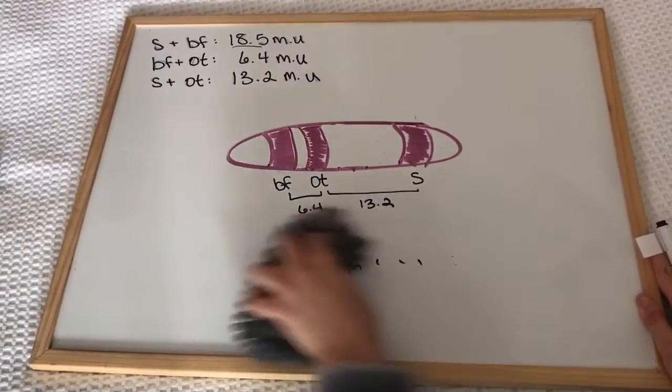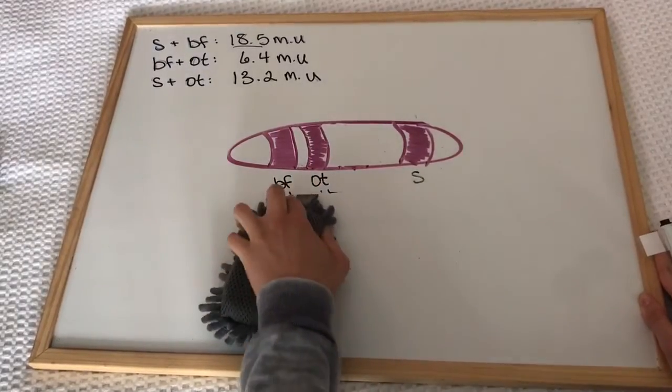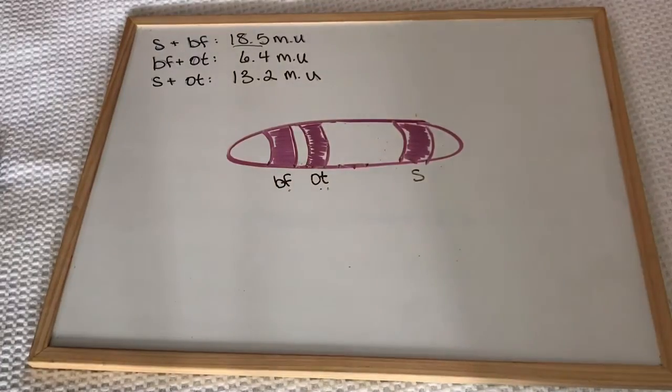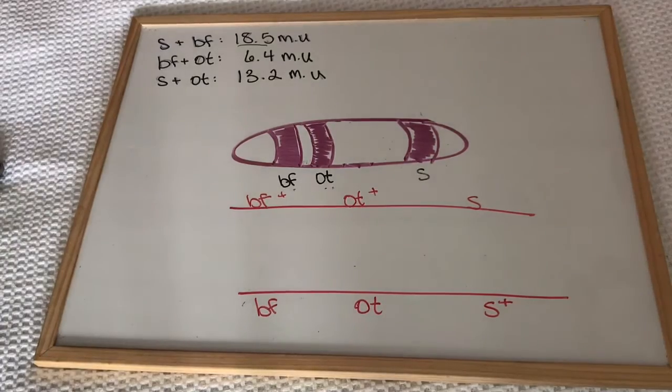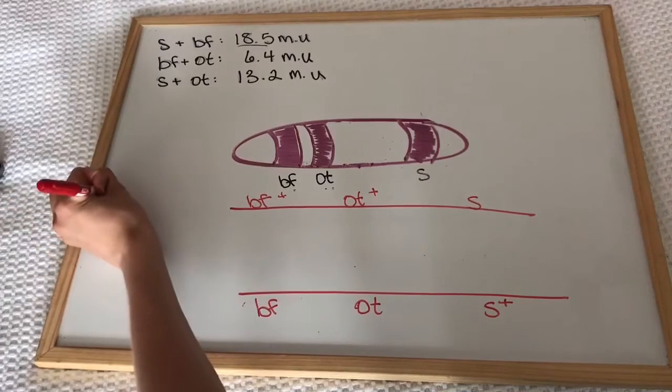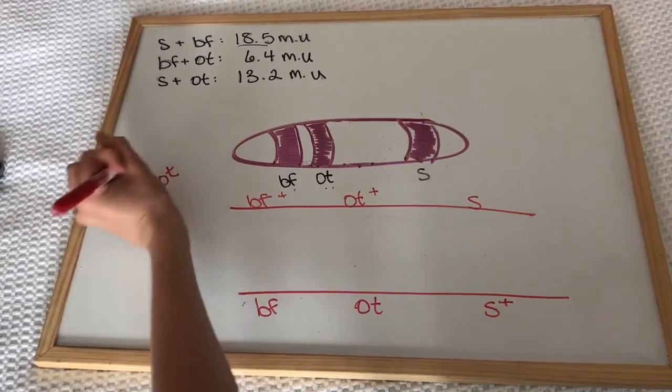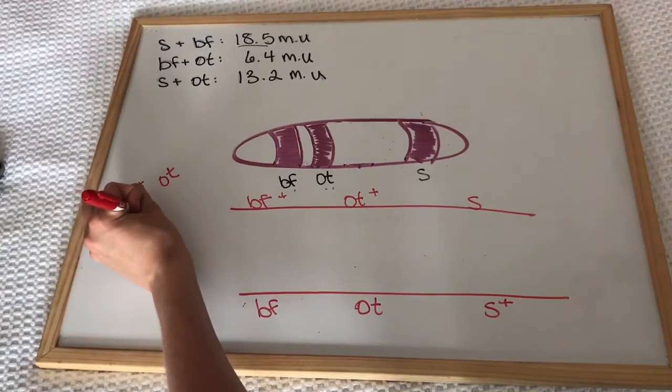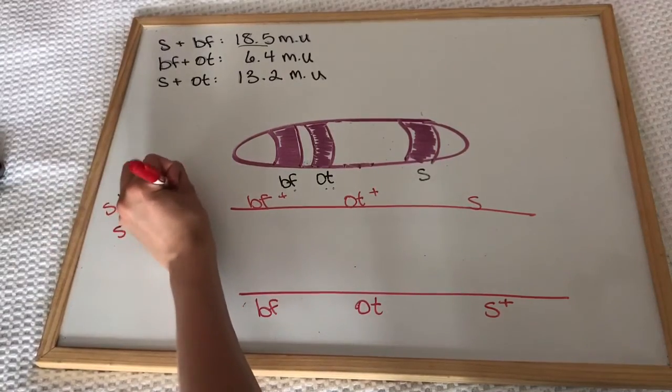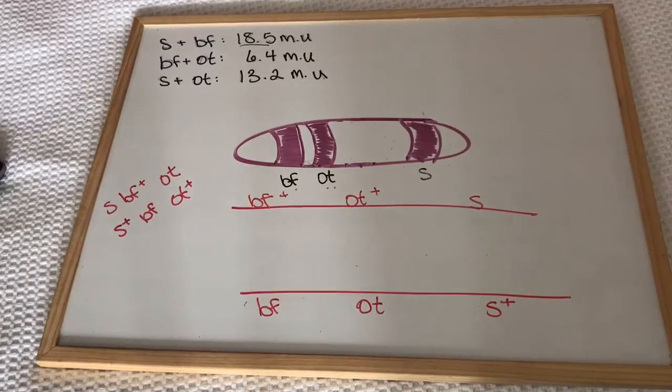Now that we have the map, we can figure out this conundrum. Let's really think about what happens when two genes crossover. If we look back at the chart we had before and we were able to see two combinations that had the least amount of recombinants, we would see that it was S, BF plus, OT and S plus, BF, OT plus. The reason for this is because there has to be a double crossover in order for this to happen.